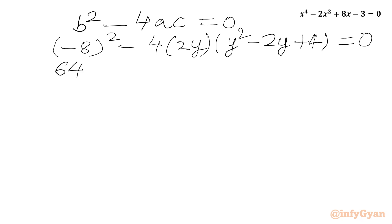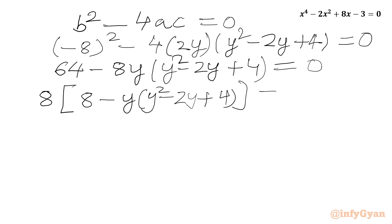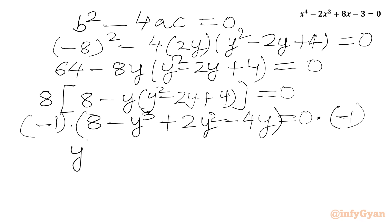(-8)² is 64. -4 × 2 = -8, so we write 64 - 8y(y² - 2y + 4) = 0. Taking 8 as a common factor, we get 8[8 - y(y² - 2y + 4)] = 0, which gives 8 - y³ + 2y² - 4y = 0. Multiplying both sides by -1 gives the cubic equation y³ - 2y² + 4y - 8 = 0.